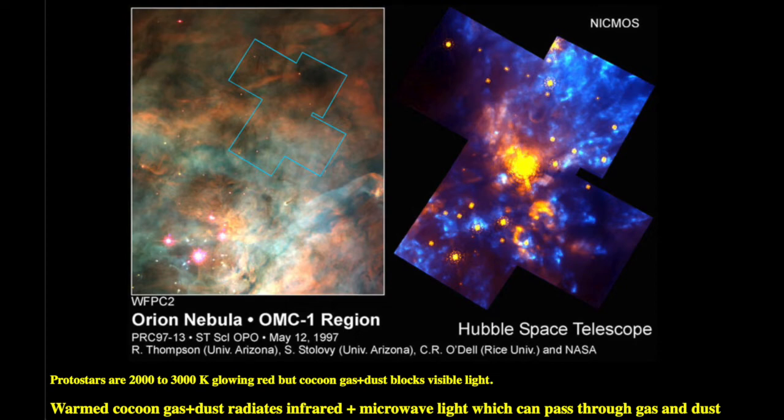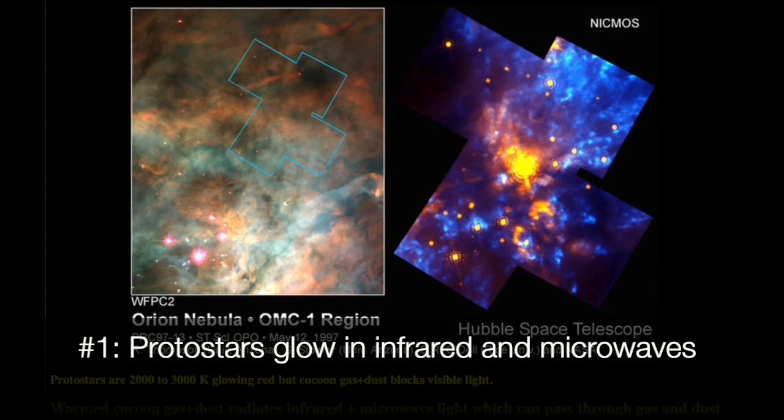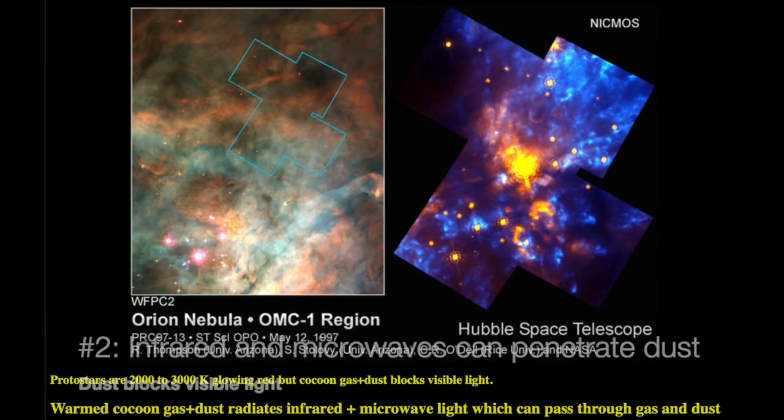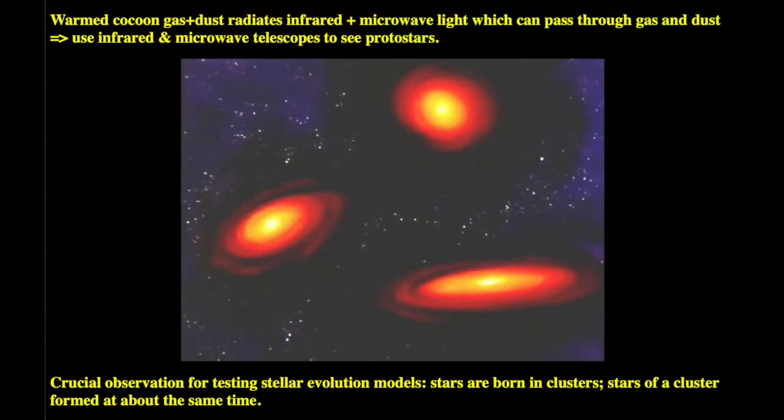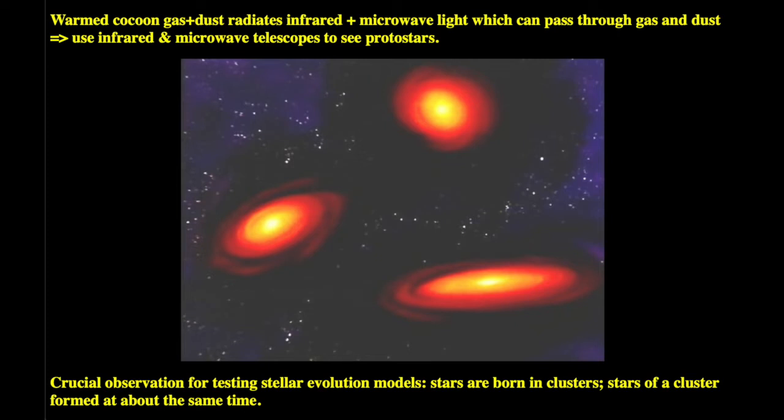So, we use infrared and microwave telescopes for two reasons. Number one, the objects themselves glow in these wavelength bands, and two, those longer wavelength bands are able to pass through the dust. The bottom picture illustrates another important point about star formation. All the stars are born in clusters, and all the stars in a given cluster start forming at the same time. This is why we look at star clusters to test our models of star formation and life cycles.